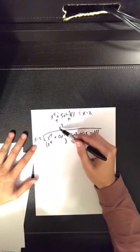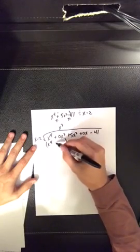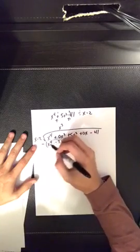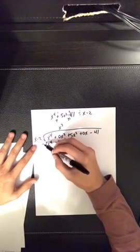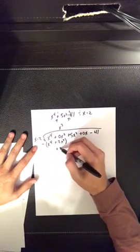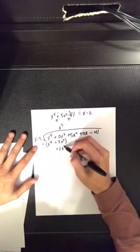Then you multiply x to the third times negative 2, which is minus 2x to the third. Then you subtract all that, and this turns to a positive, so it would be a positive 2x to the third.